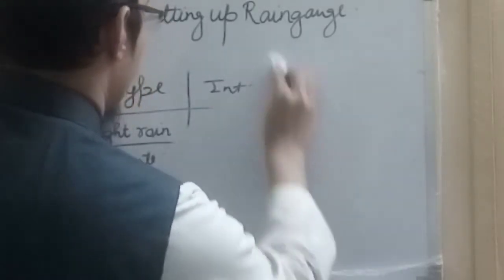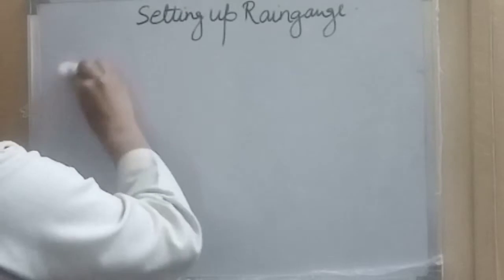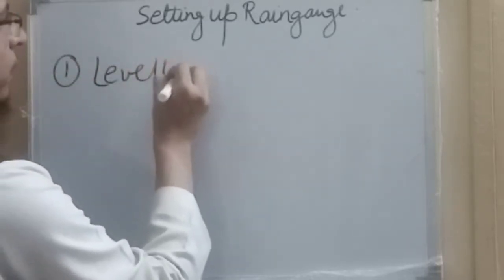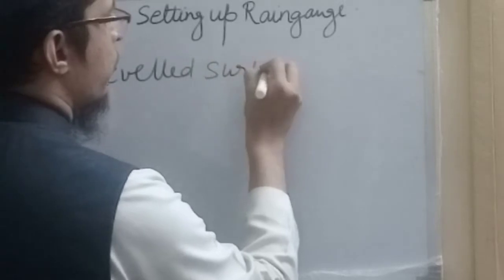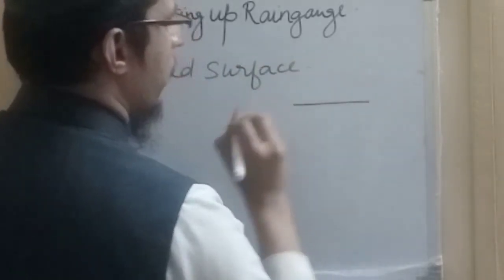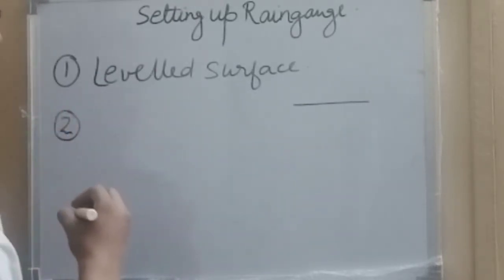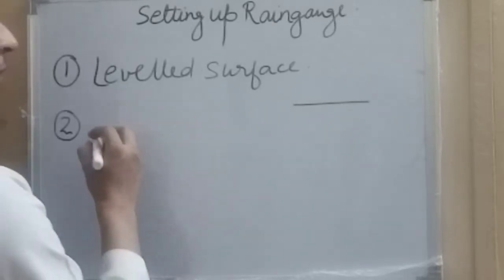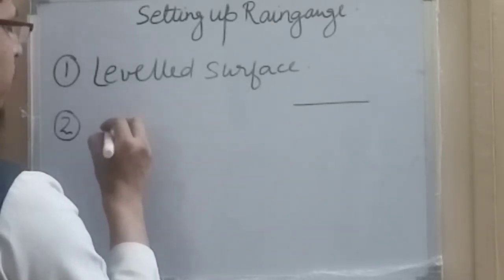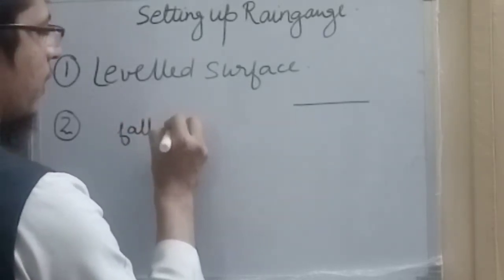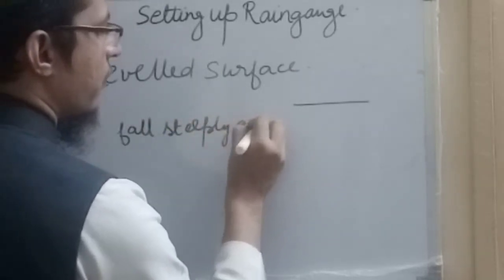First thing is that we should look for leveled surface. The surface on which we are going to place the rain gauge should be leveled, it should be flat. In case in hilly regions we are not able to find a leveled surface, then in no case should the slope of the land fall steeply against the direction of wind.